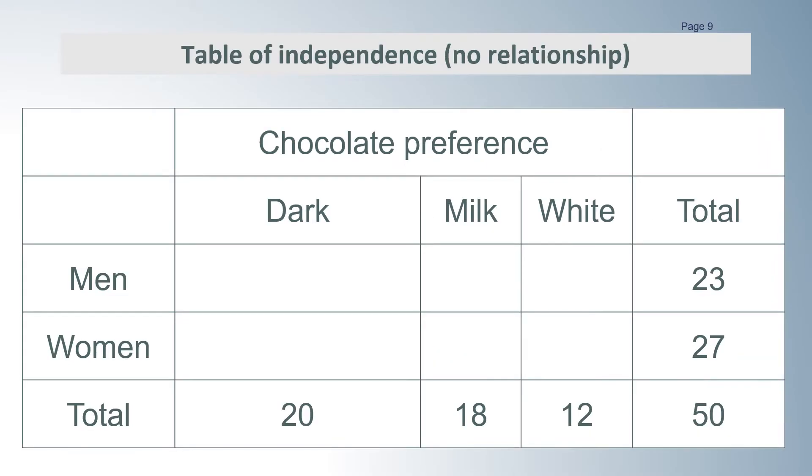23 out of 50 of the participants were men. So we would expect 23 out of 50 or 9.2 of the 20 dark chocolate lovers to be men and 27 out of 50 or 10.8 of them to be women. As this is theoretical, it is okay to have fractions of people. We can check that our numbers are correct if the total still works. 9.2 plus 10.8 does equal 20.